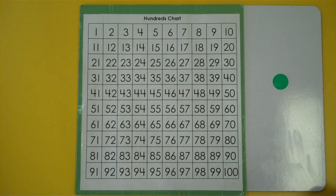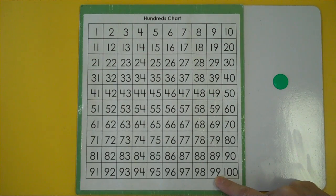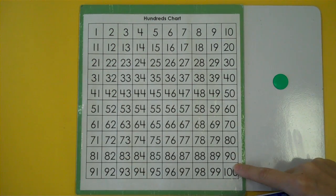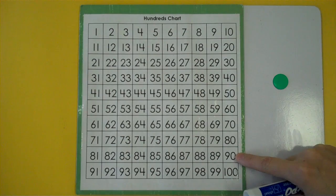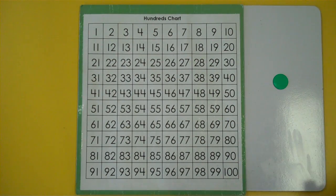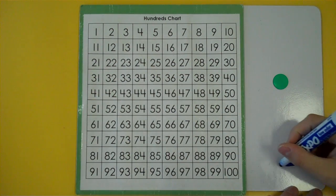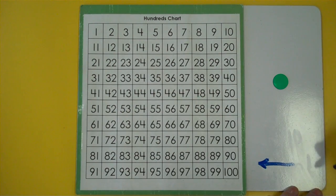So on the hundreds chart if we're subtracting and our answers are smaller than our numbers, then we're going to be moving to the left. 99 is less than 100, or up. 90 is less than 100. When we move to the left everything gets smaller by the ones place.